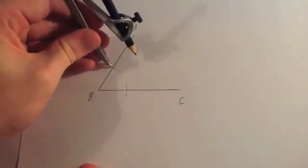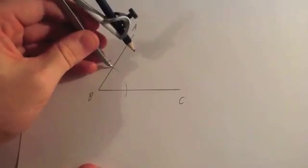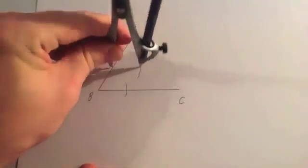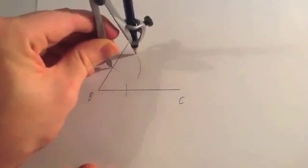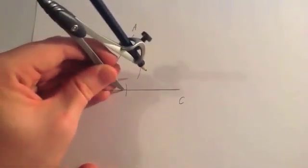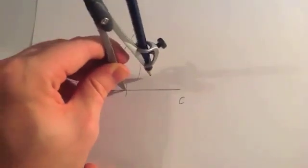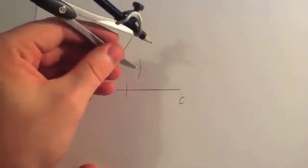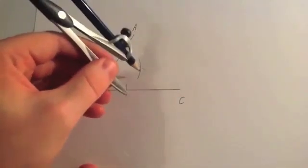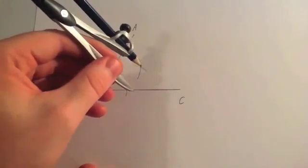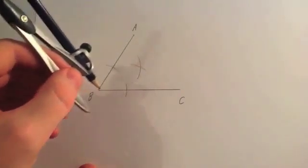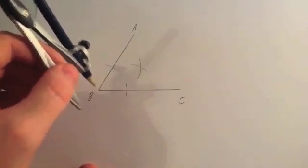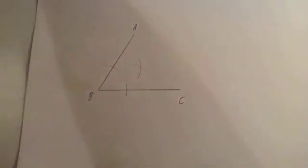Then get your compass, put the point where the arc and the line intersect, and do an arc towards the centre of the angle. Then, switching around and doing the other one, do another arc towards the centre. You'll see that those two arcs intersect, and if we connect up where those two arcs intersect and the angle, you'll see that that will create the angle bisector.